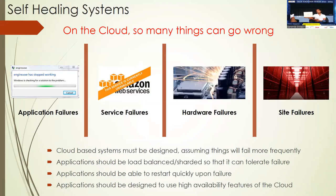The next topic is how we design applications to manage failures. Compared to an on-premise data center, one important factor when it comes to cloud is that we have to expect more failures. Many things can go wrong: the application can fail, cloud-based services you use may fail, your underlying hardware may fail, and even an entire cloud region can fail. You have to design and implement applications so they can tolerate failure — assuming failures will occur and implementing your application in a load-balanced or sharded manner, rather than as a monolithic single-node system.